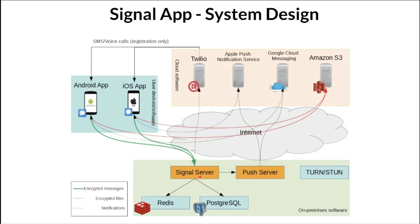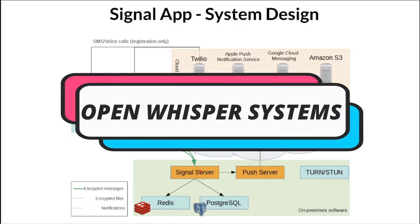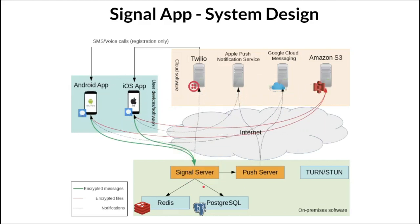The Signal server is very important because it has a lot of responsibilities, such as registering users and storing end-to-end encrypted messages. The Signal server is developed and managed by Open Whisper Systems and is entirely written in Java. A GitHub link for the Signal server will be provided in the description so you can look at how the code is structured.